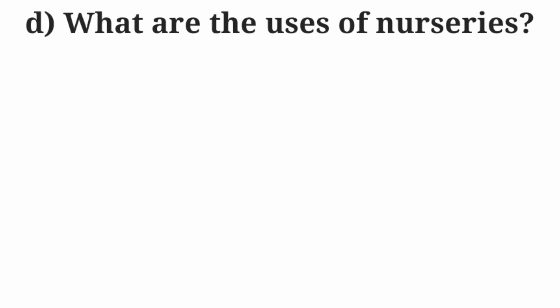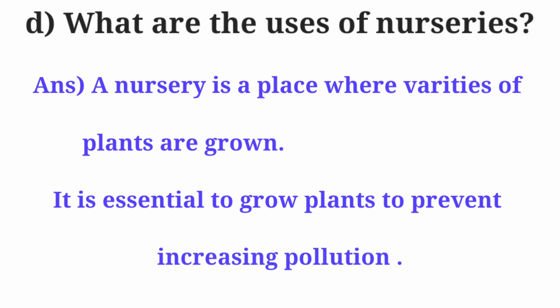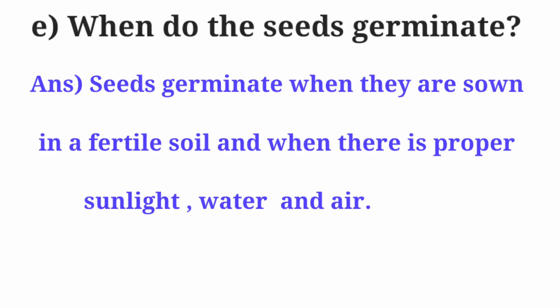Question D. What are the uses of nurseries? Answer: A nursery is a place where varieties of plants are grown. It is essential to grow plants to prevent increasing pollution. Question E. When do the seeds germinate? Answer: Seeds germinate when they are sown in fertile soil and when there is proper sunlight, water and air.